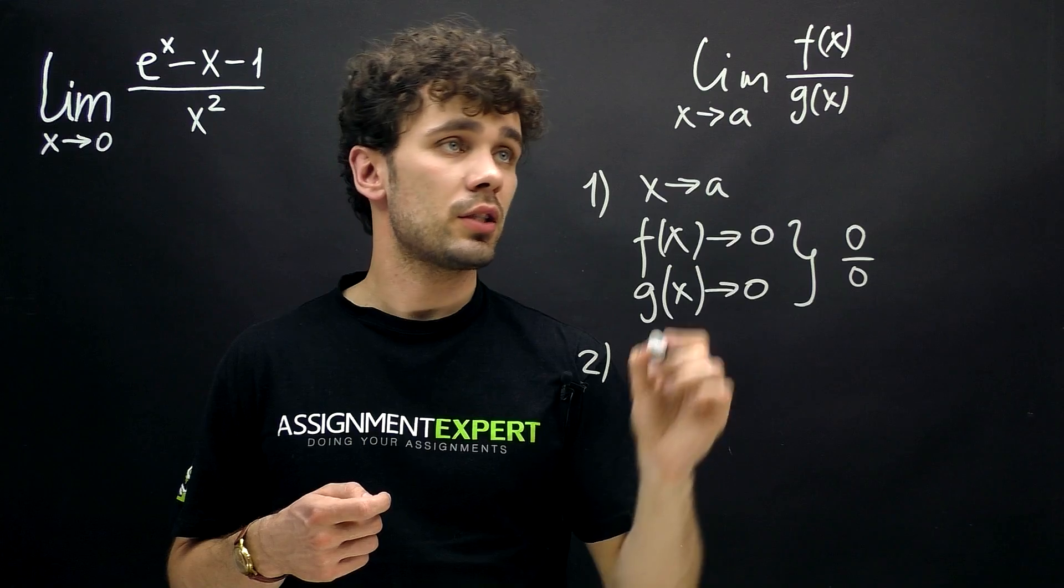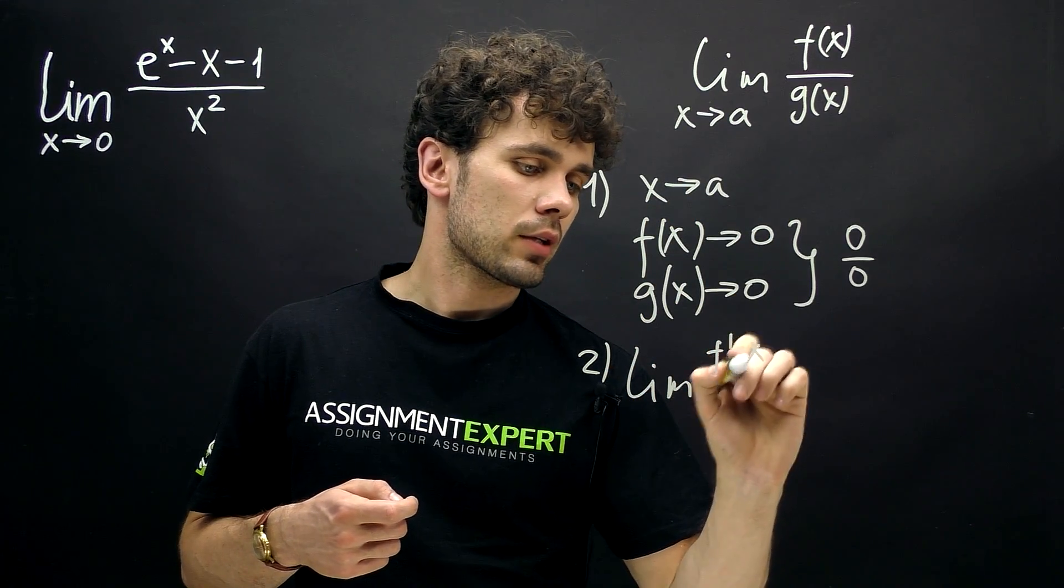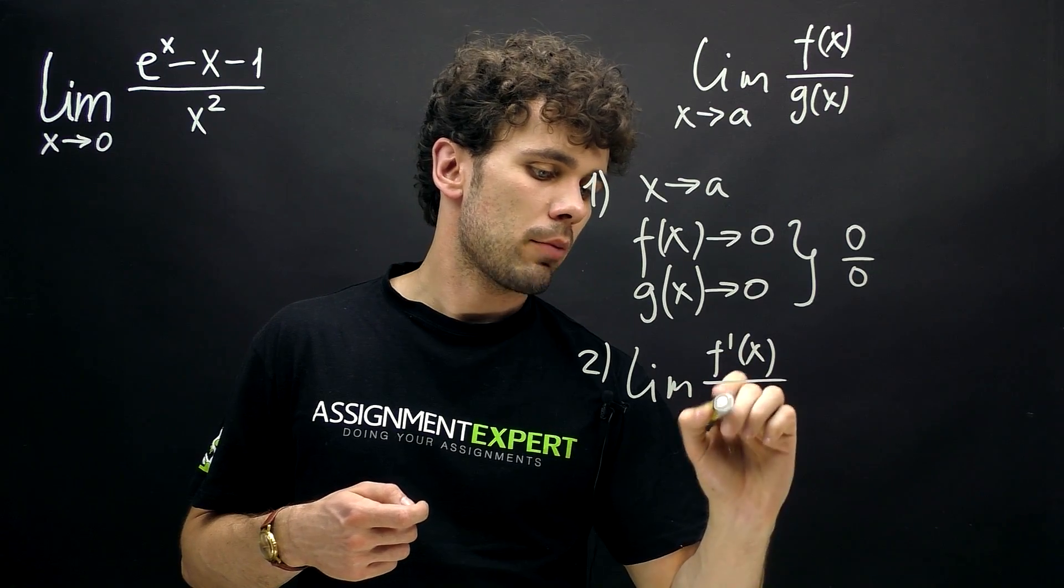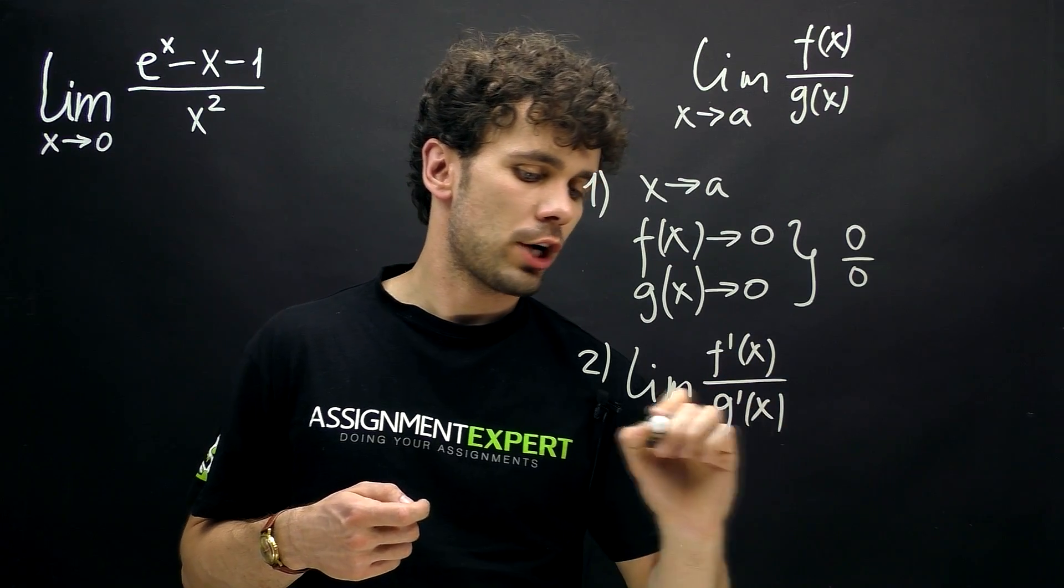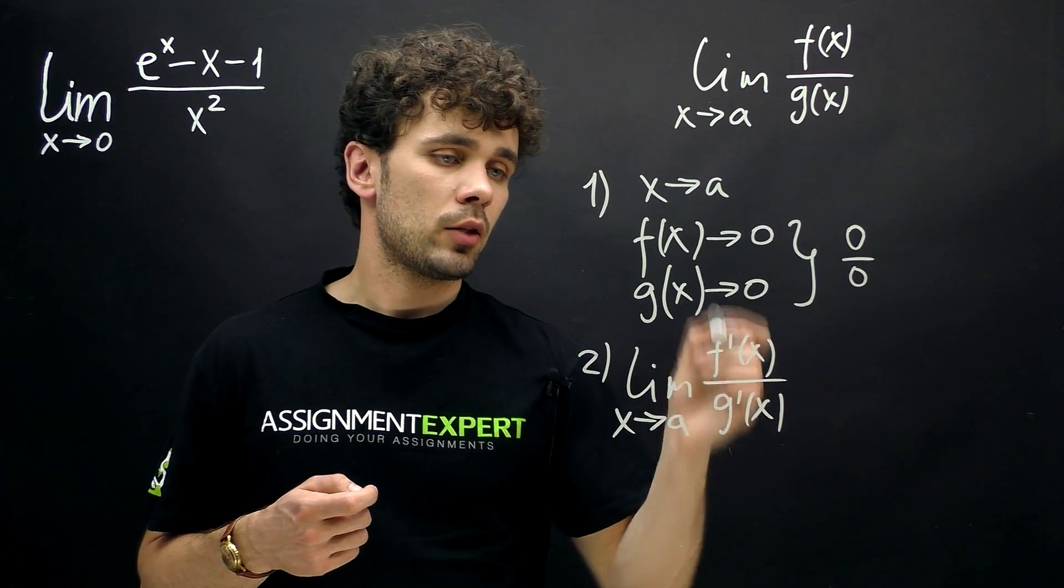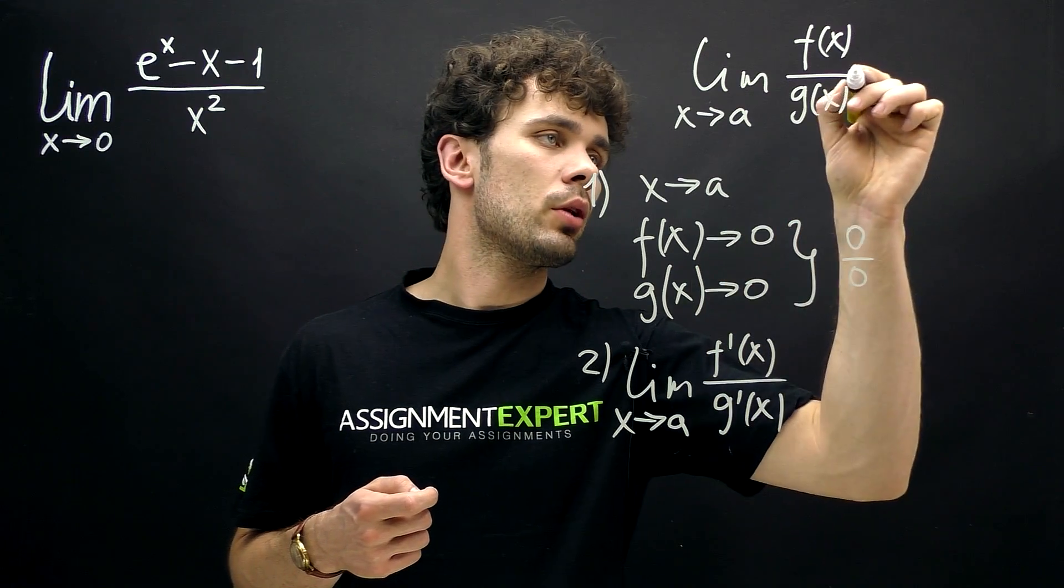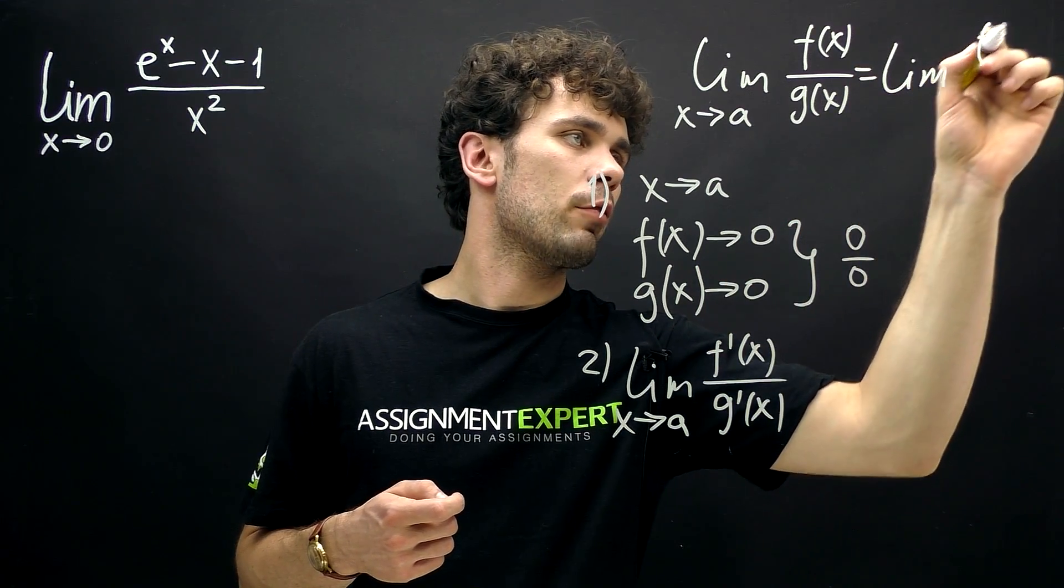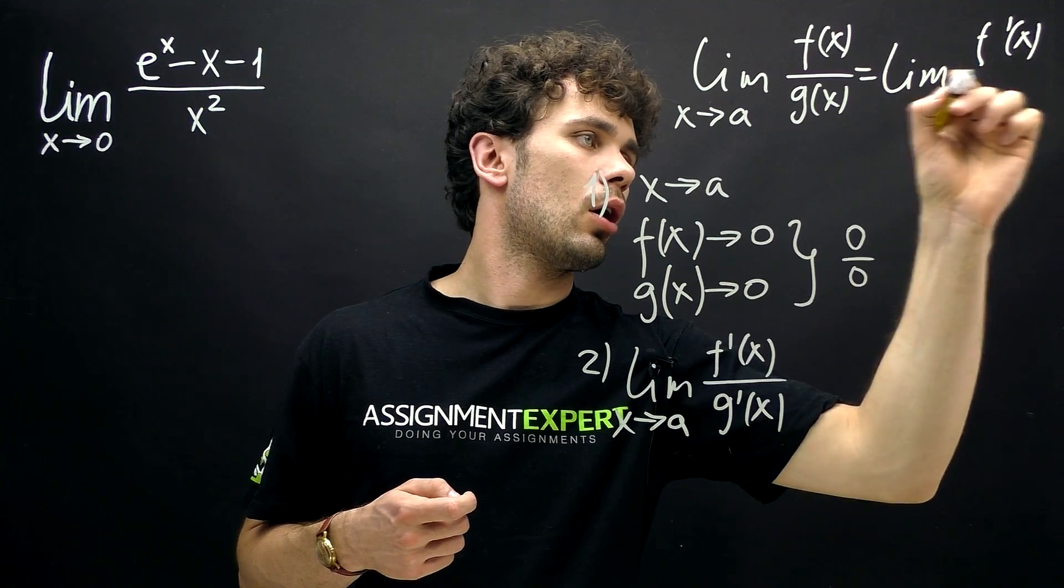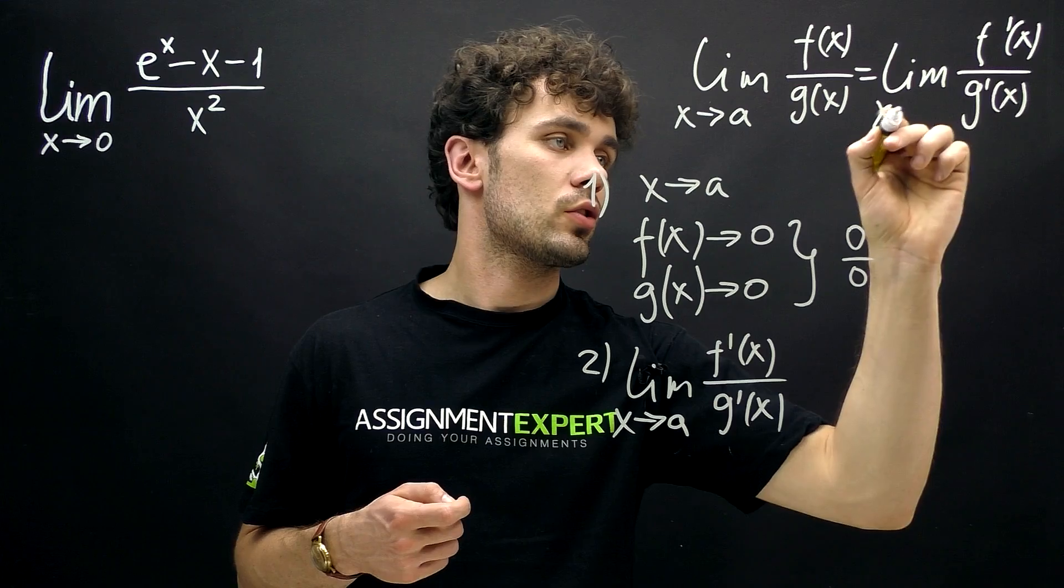And the second condition is that the limits of f prime of x over g prime of x for x tends to a should exist. And when these two conditions are met, we can replace our initial limit with the limits of f prime of x over g prime of x for x tends to a.